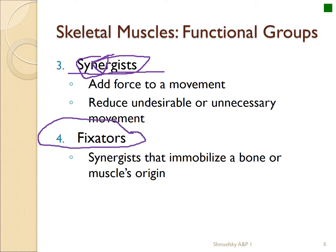Another group of muscles are called fixators, which work somewhat like synergists and sometimes like antagonists. Fixators tighten the bones around a joint to make sure the intended body part moves during a flexion or extension. They are very important in posture and core stability — when you hear about 'core,' you're talking about a lot of fixator muscles. They tend to immobilize bones for standing, maintaining posture, or balance. You use a lot of fixators when walking up steps where your balance is constantly changing.